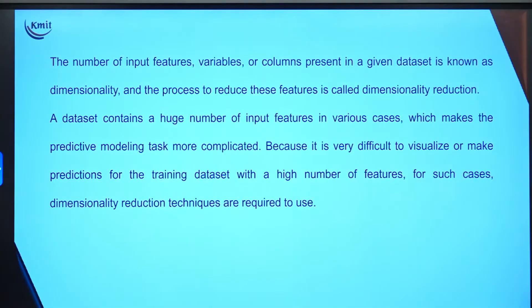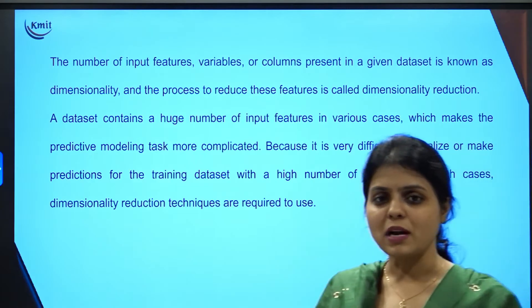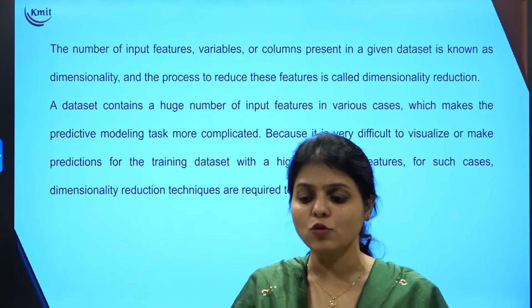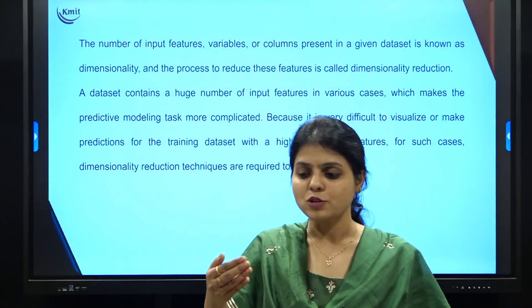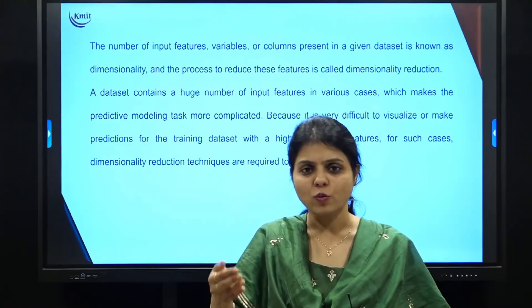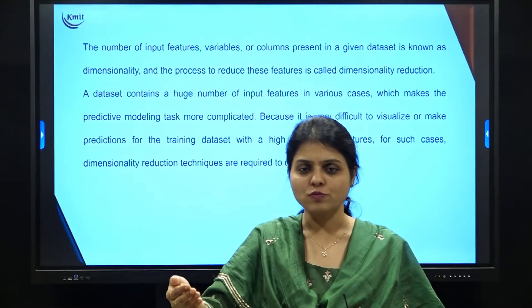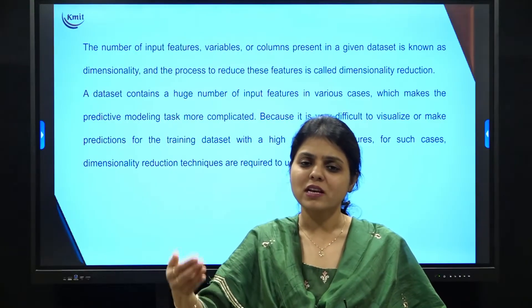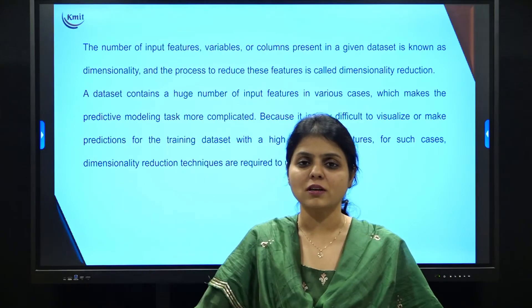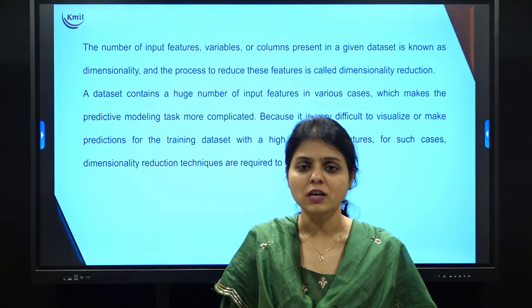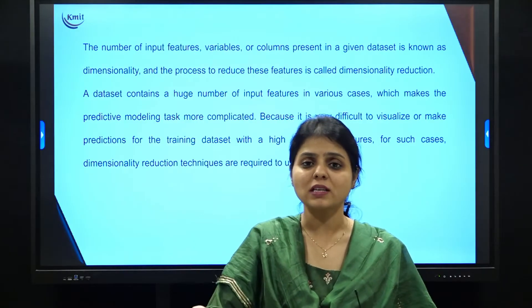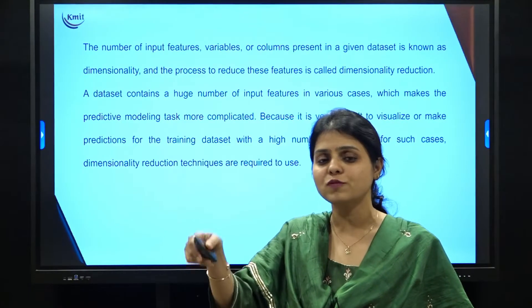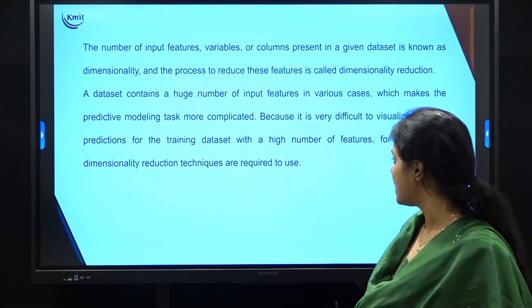Why do we need this? When working on a machine learning model with a huge dataset that has many features, it makes the predictive modeling task complicated because we cannot decide which parameters to consider for prediction. For example, in house price prediction, the relevant features are locality, square footage, and number of bedrooms. Features like wall texture or builder details are not required and complicate the task, so we try to reduce those features.